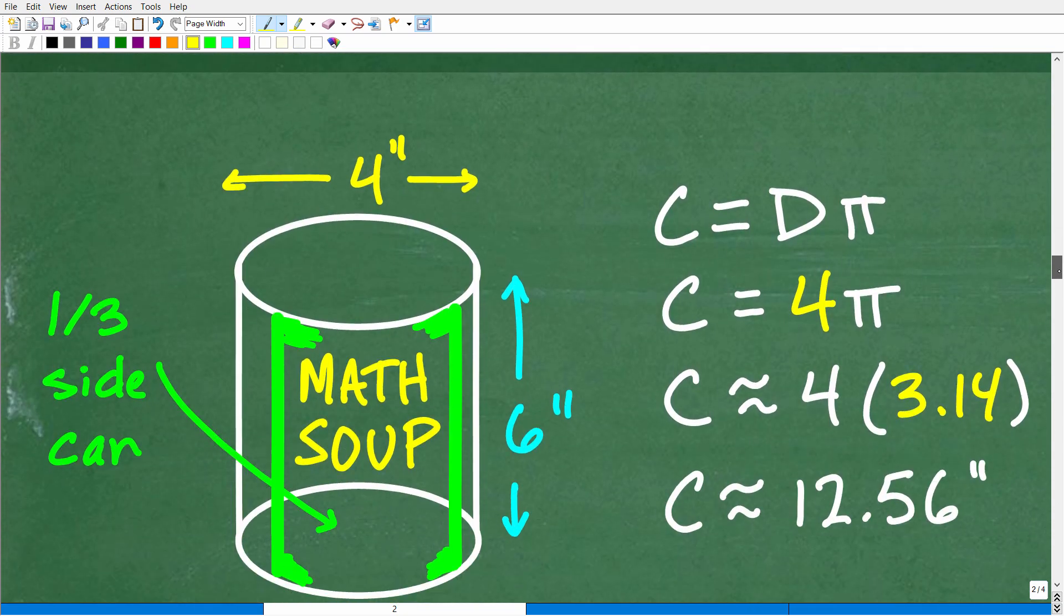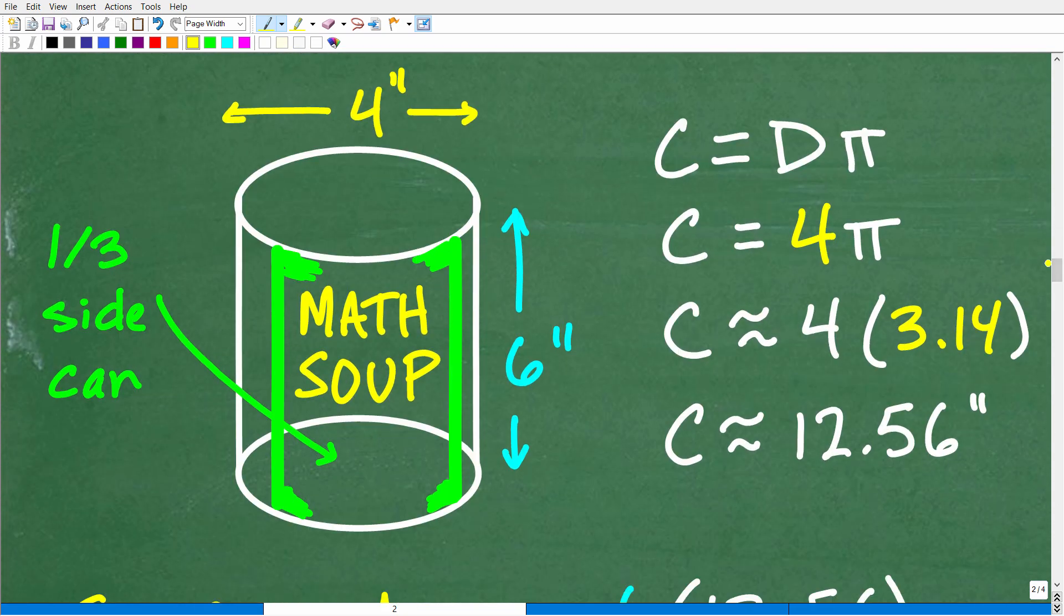Okay. So here is our situation. Here's our lovely can of math soup. Now we know it's six inches tall, four inches wide, and we have our strategy, right? Our strategy is we're going to find the surface area of the entire side of the can. And then we'll just take one third of that.